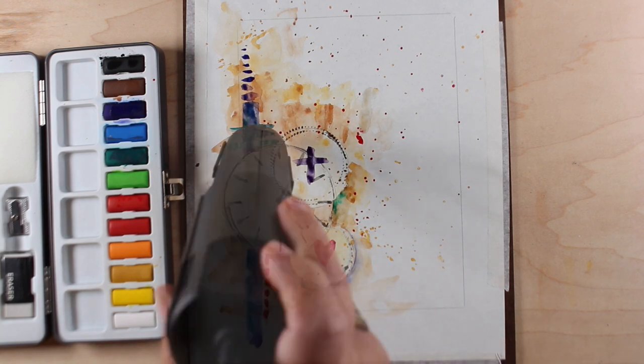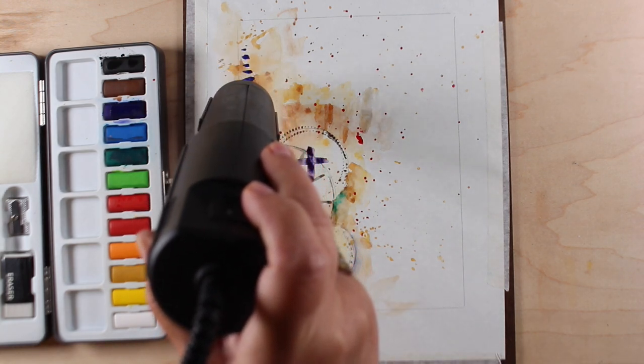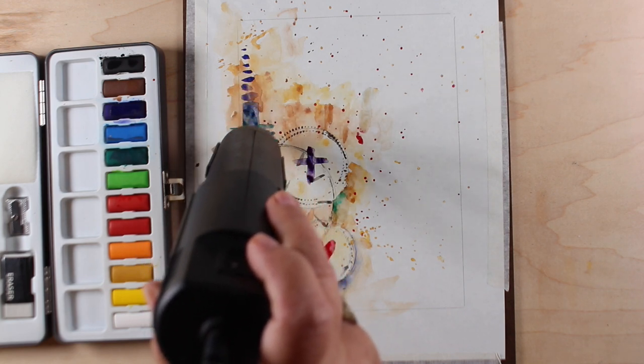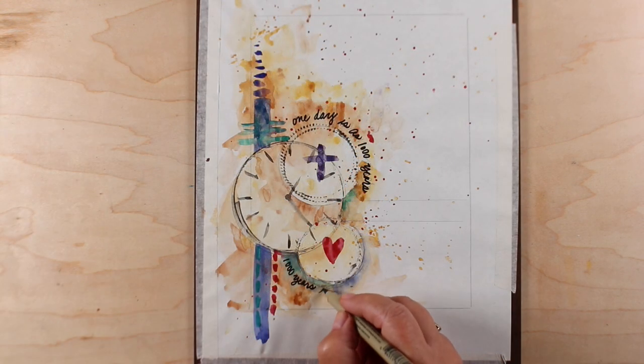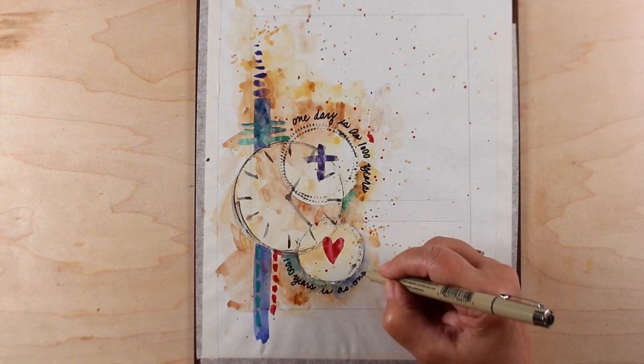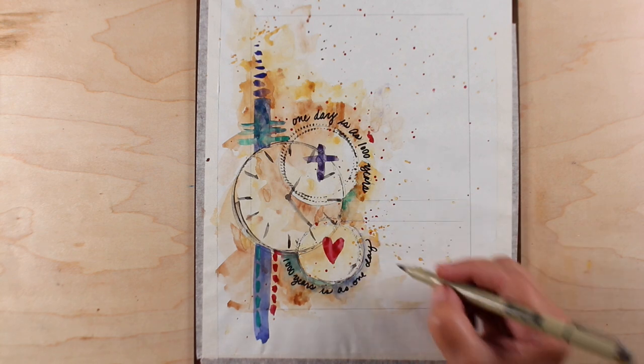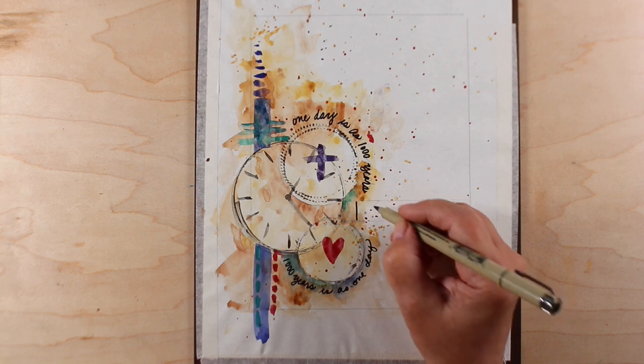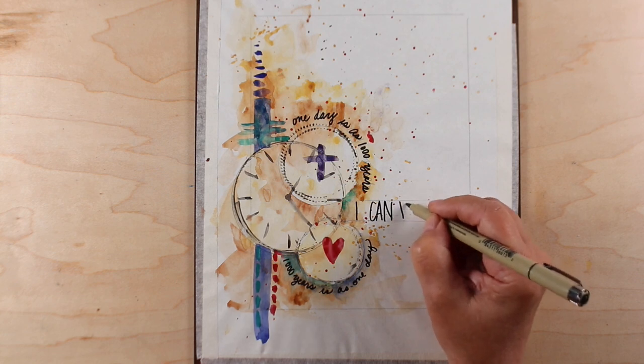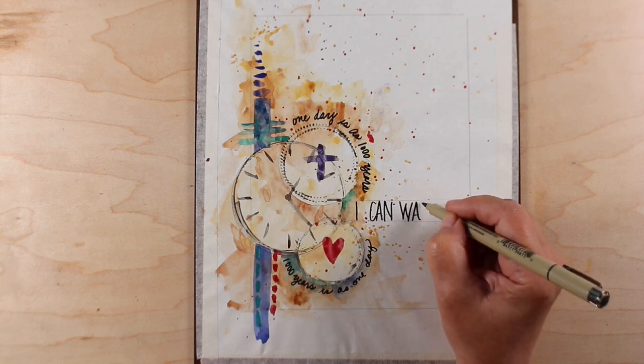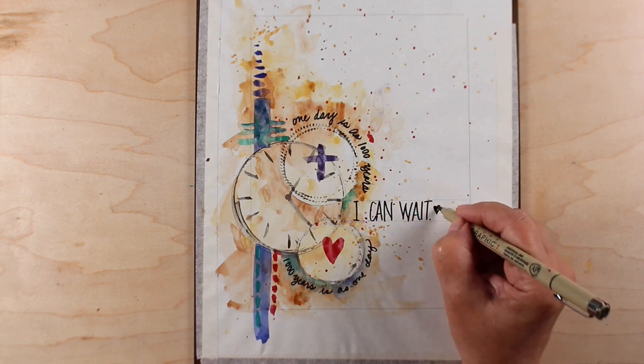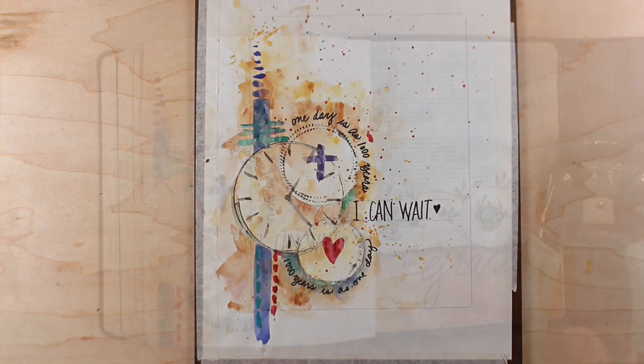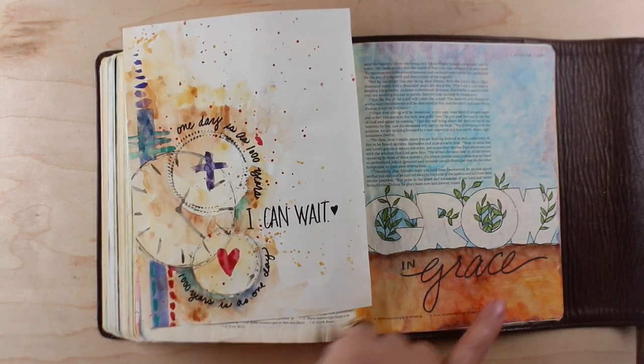That big line was bothering me. So I debated whether to use some white pen to break it up, but instead I decided to take some green and make a little design within it and then dried it all up again so that I could get out a pen and write the verse around the circles. And I drew two lines so I would get these straight to write my commitment to the Lord that I can wait. I don't need to rush ahead of God. This is all in his timing and whatever he wants to do, I am there for it. It might be hard, but I can wait and I want him to know that. I want to put that in my Bible.